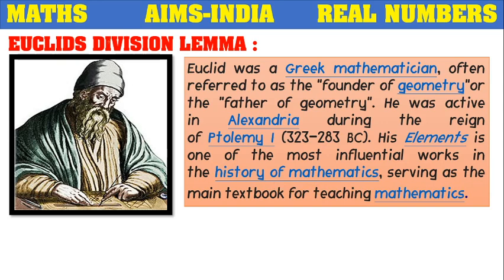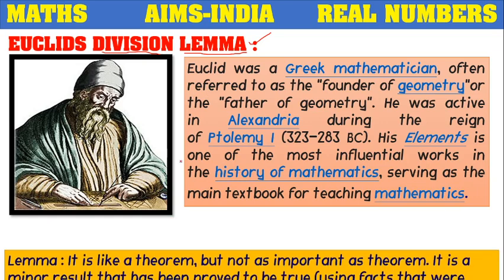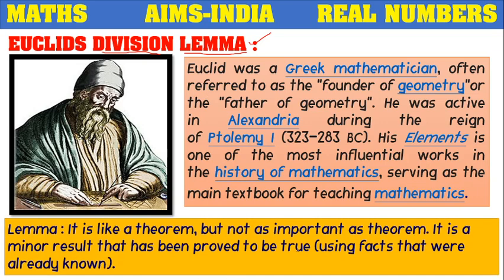Regarding division, Euclid proposed a theorem called Euclid's Division Lemma. A lemma is like a theorem but not as important as a theorem — consider it a small theorem or minor result that has been proved to be true using facts that were already known. Based on division, Euclid proposed this small theorem called Euclid's Division Lemma.